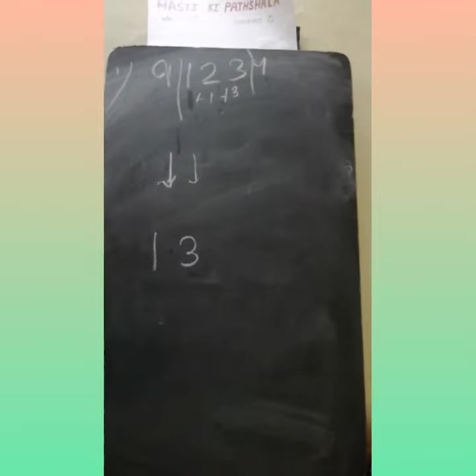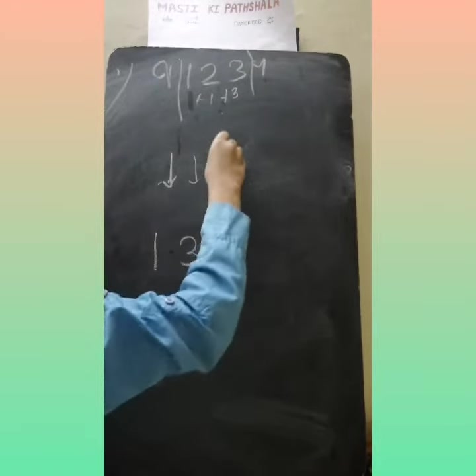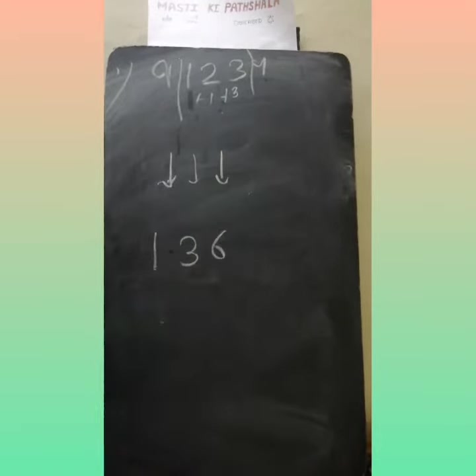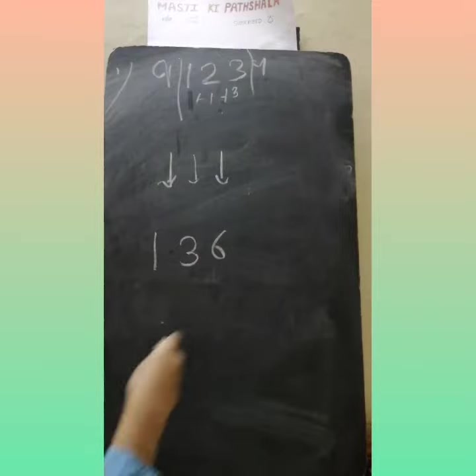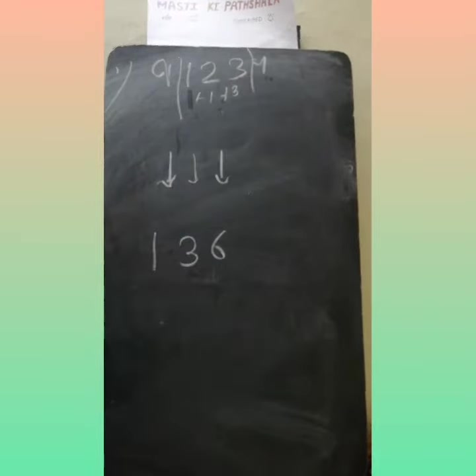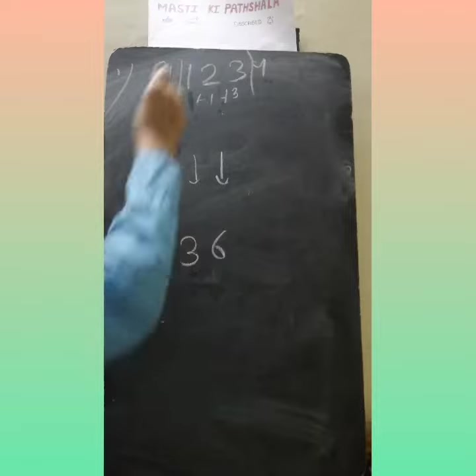So three plus three, that gives us six. Now you will be thinking why I put the slash here. I put the slash here because this is our quotient part and this is our remainder part.